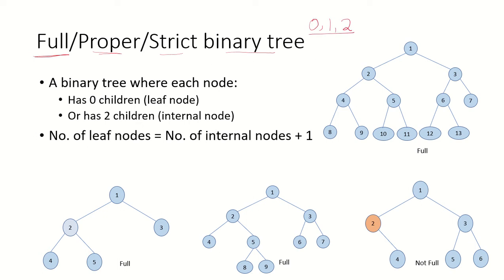But in a full binary tree, any node can have either 0 children — making it a leaf node — or 2 children, making it an internal node. You will always see that in a full binary tree, the number of leaf nodes will be equal to the number of internal nodes plus 1.